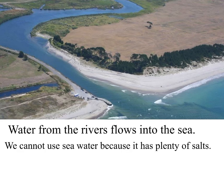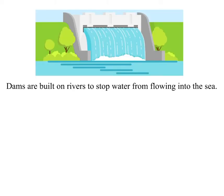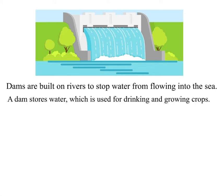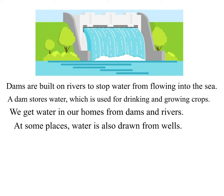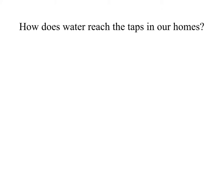We cannot use sea water because it has plenty of salts. Dams are built on rivers to stop water from flowing into the sea. A dam stores water which is used for drinking and growing crops. We get water in our homes from dams and rivers. At some places, water is also drawn from wells.